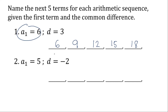For number two, same process. Write a-sub-one, which is five. Now add negative two to five. Five plus negative two is three. Three plus negative two is one. One plus negative two is negative one. And negative one plus negative two is negative three. So these are the first five terms of item number two.